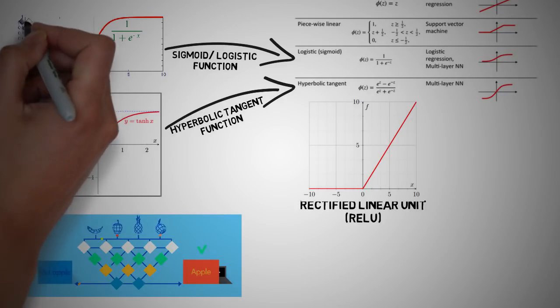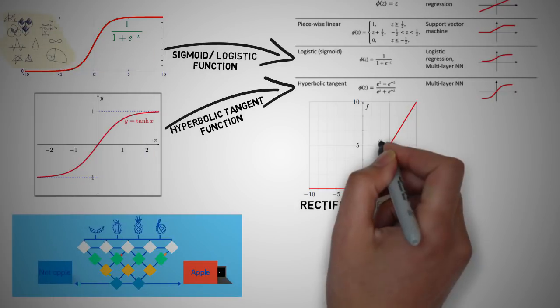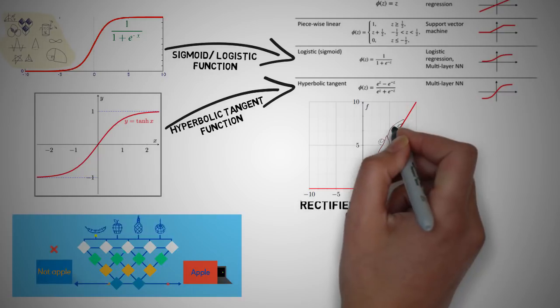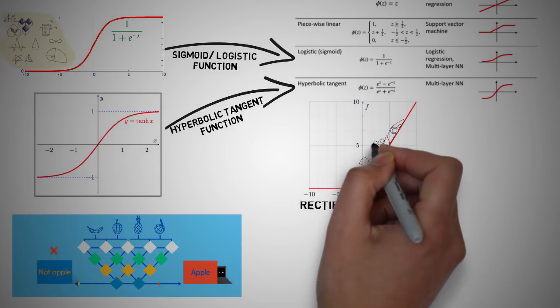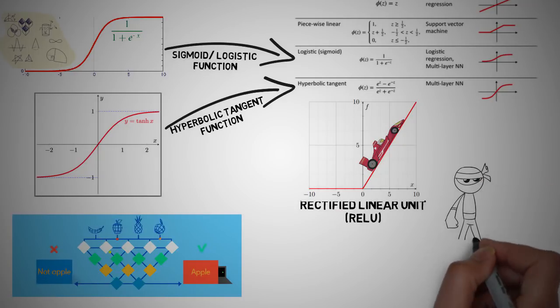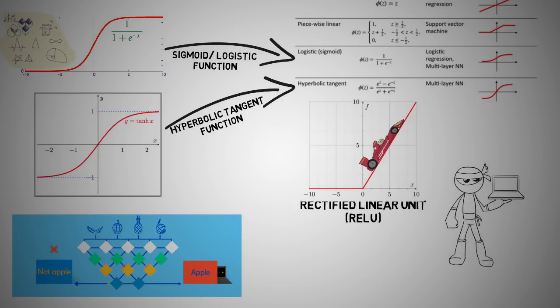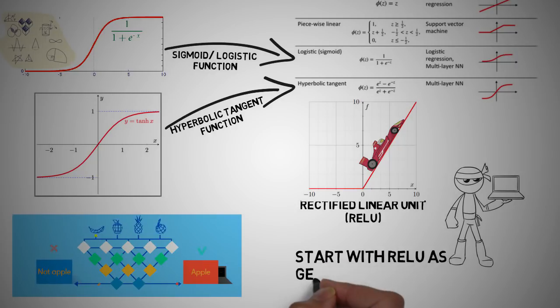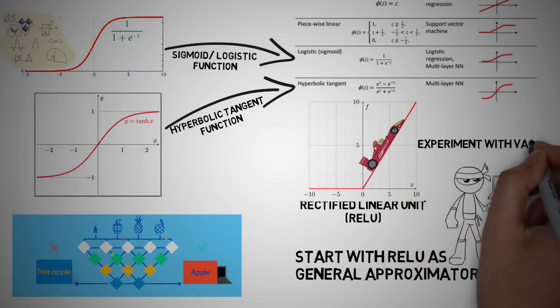When you know the function you're trying to approximate has certain characteristics, you can choose an activation function which will approximate the function faster, leading to a faster training process. For example, a sigmoid function works well for classification because approximating a classify function as a combination of sigmoid is easier than maybe a ReLU. This will lead to faster training process and convergence. You can use your own custom functions too. If you don't know the nature of the function you're trying to learn, then maybe it would be better to start with ReLU and then work backwards. ReLU works most of the time as a general approximator.